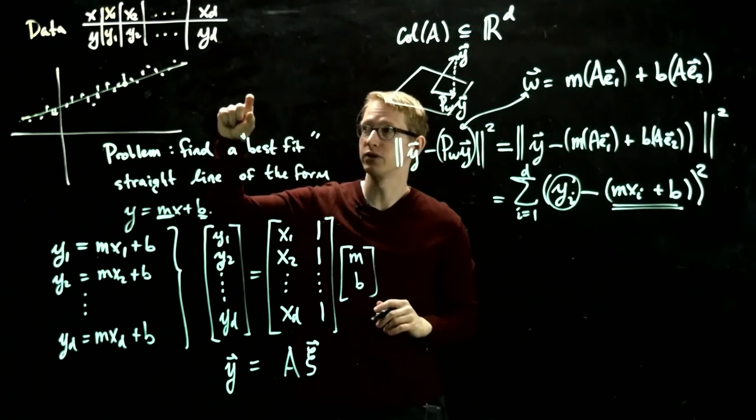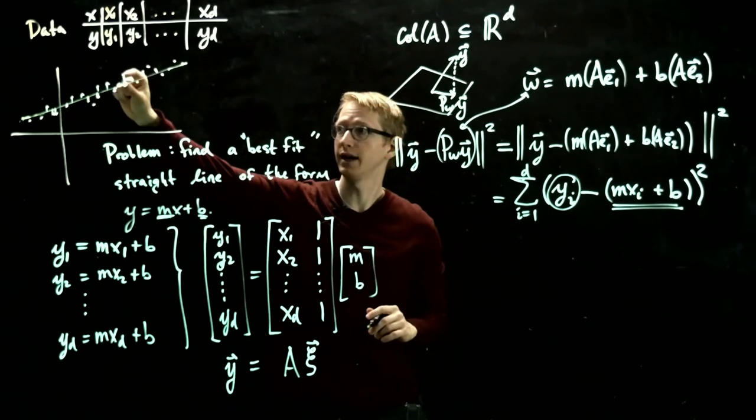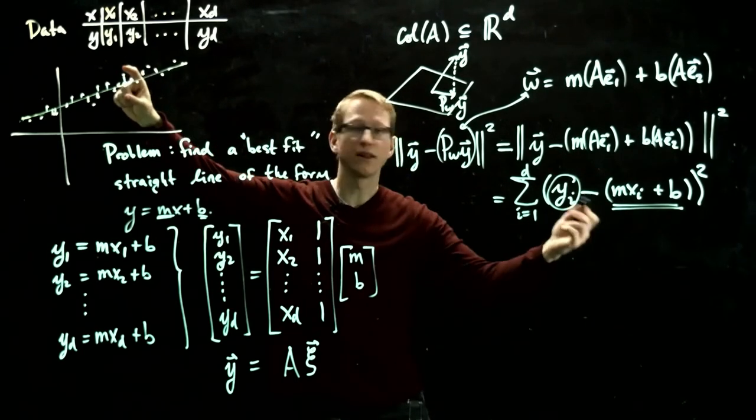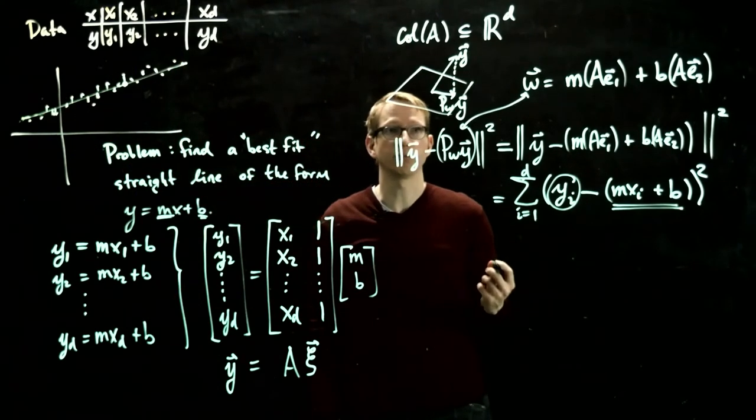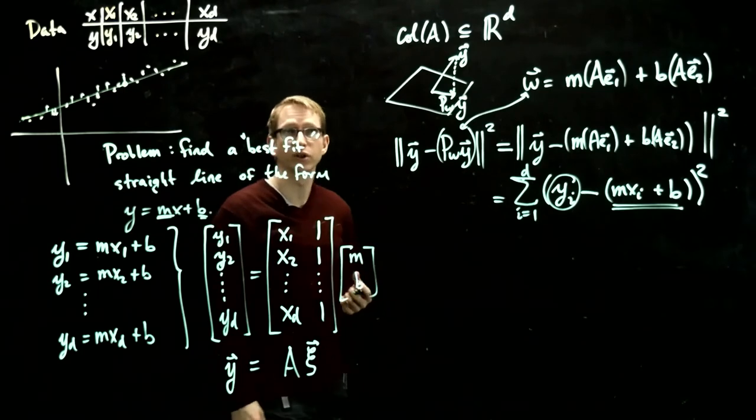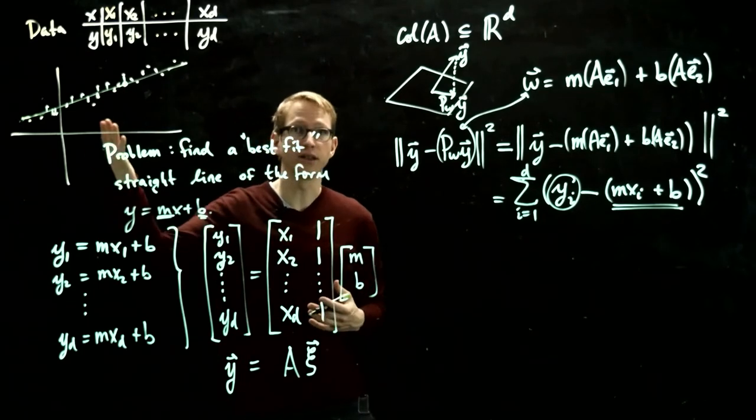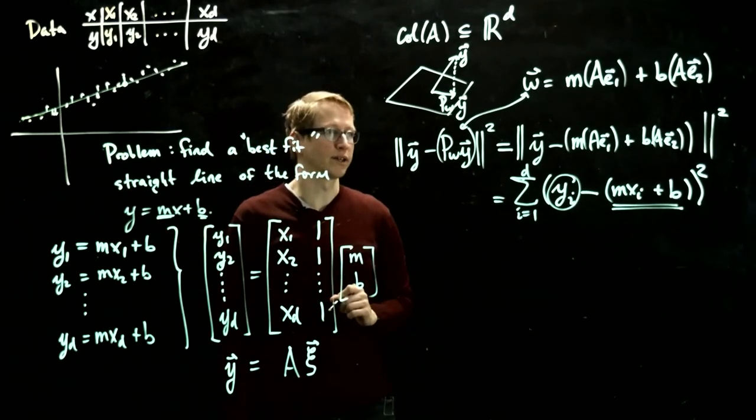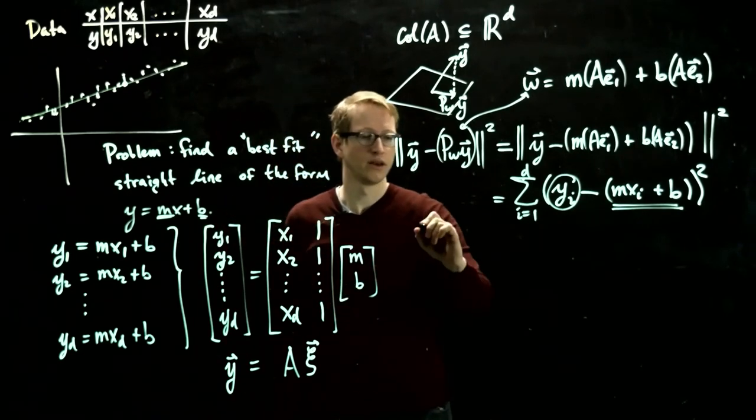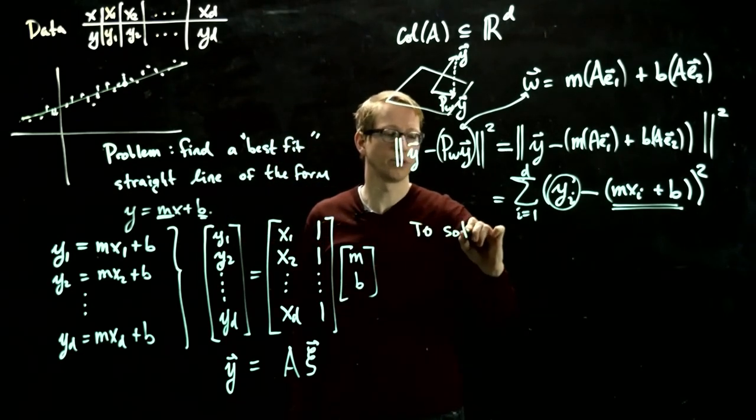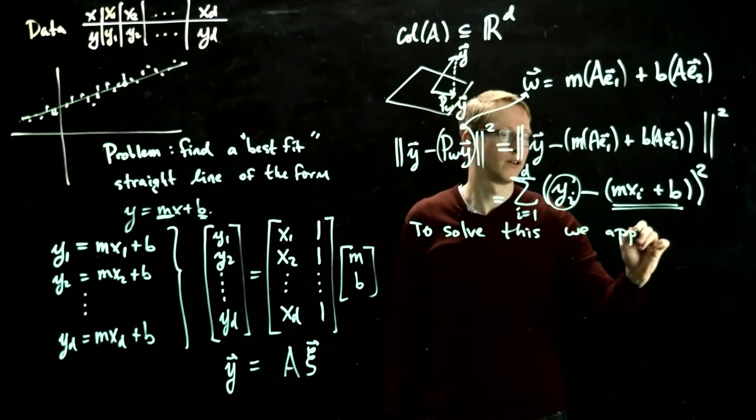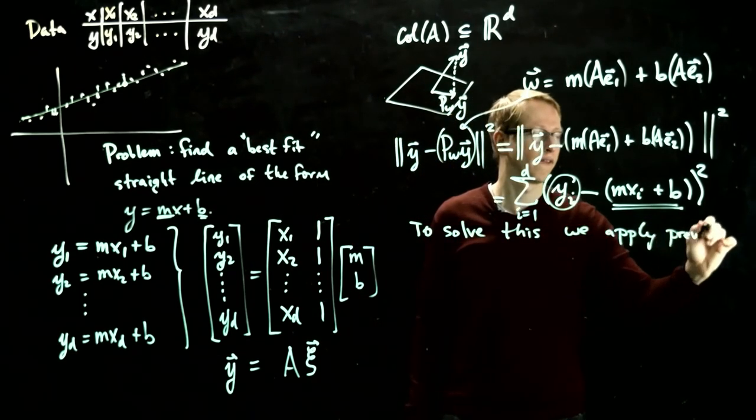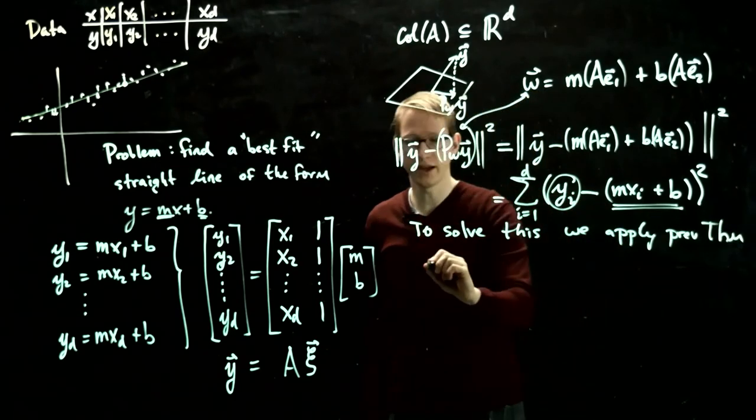And we take that distance, that difference, which is this little vertical height. We square that height, and then we add up all of these heights. And we want to minimize that expression. So the solution to this least squares problem is graphically given by an expression like that. And we know how to solve this. To solve this, we apply our previous theorem.